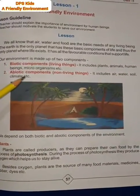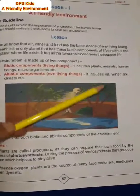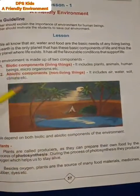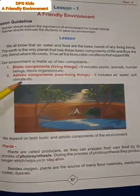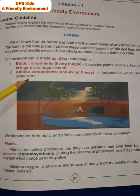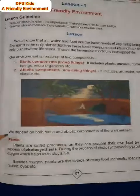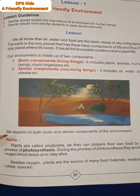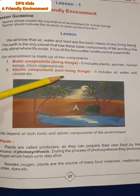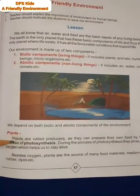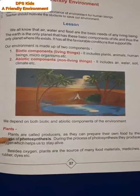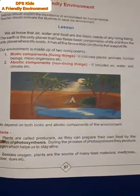Abiotic components में non-living things आती हैं, जैसे कि air, water, soil, climate — हमारा जो मौसम होता है जो change होता रहता है। ये सभी abiotic components में आते हैं। We depend on both biotic and abiotic components of the environment — हम living things और non-living things दोनों पर ही depend होते हैं।